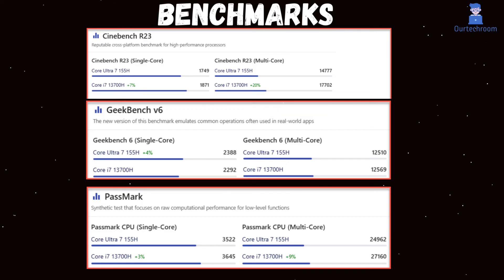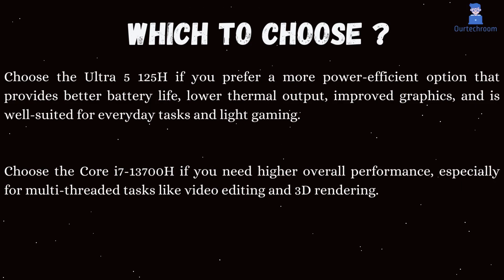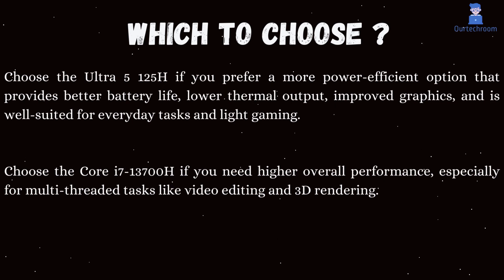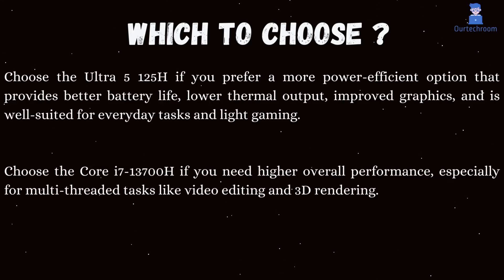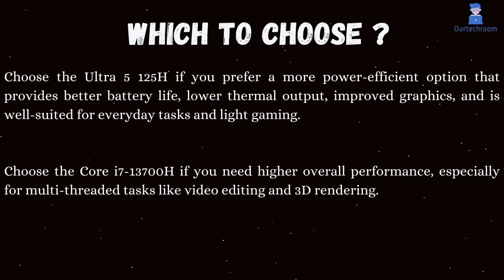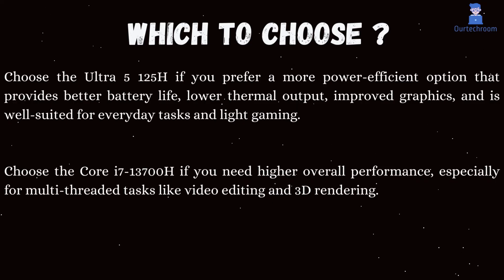Choose the Core Ultra 7 155H if you prefer a more power-efficient option that provides better battery life, lower thermal output, improved graphics, and is well-suited for everyday tasks and light gaming. Choose the Core i7-13700H if you need higher overall performance, especially for multi-threaded tasks like video editing and 3D rendering.